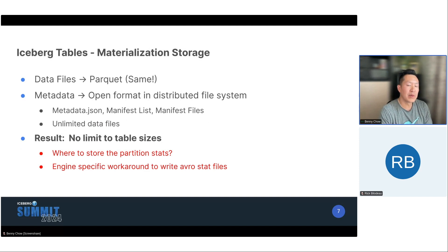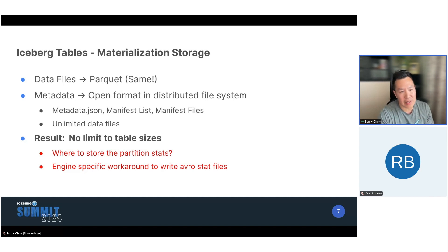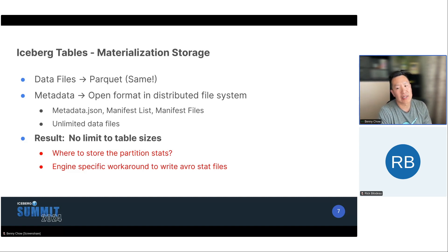When we moved to Iceberg, the storage table is in Iceberg format. The data files are still Parquet, so that hasn't really changed. But now the metadata is in an open format stored in a distributed file system. The metadata files are the usual characters: metadata JSON, manifest list, manifest files. A key feature here is that now there's no limit — unlimited data files, basically unlimited splits, and no limit to table sizes. One challenge was where to store the partition stats, since we still need that for planning. As a result, we had to do an engine-specific workaround to write Avro stat files in the metadata directory that only the Dremio engine is aware of and uses for planning.